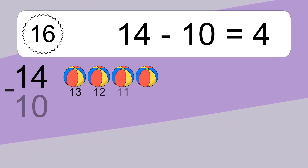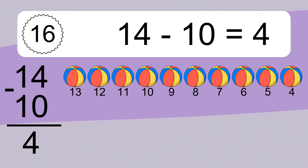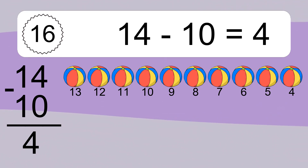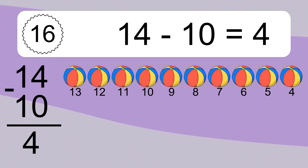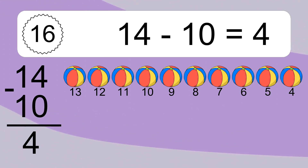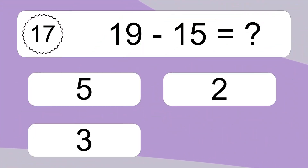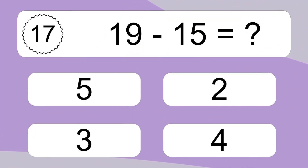14 minus 10 equals what? 14 minus 10 equals 4. Let's count it: 13, 12, 11, 10, 9, 8, 7, 6, 5, 4.